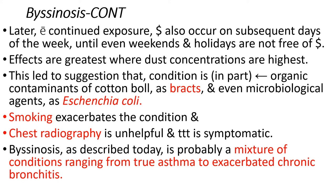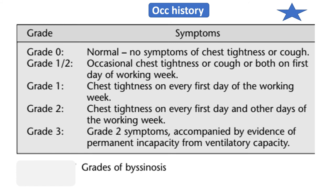Chest radiography is helpful and treatment is symptomatic. Byssinosis is probably a mixture of conditions ranging from true asthma to exacerbated chronic bronchitis. The grades of the disease are known by occupational history: grade 0, grade 0.5, grade 1, 2, and 3. By asking the worker, you can describe their byssinosis symptoms as being grade 1, 2, 3, or 0.